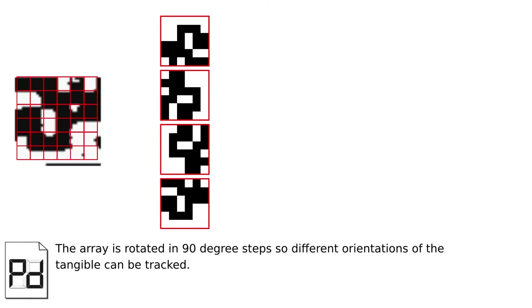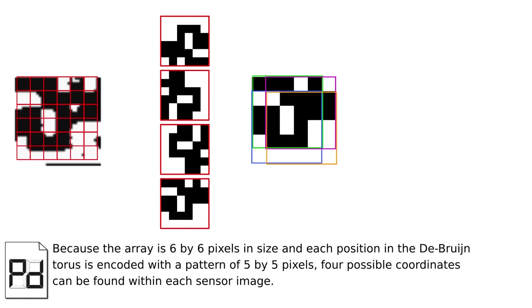The array is rotated in 90 degree steps so different orientations of the tangible can be tracked. Because the array is 6x6 pixels in size and each position in the De Bruijn torus is encoded with a pattern of 5x5 pixels,